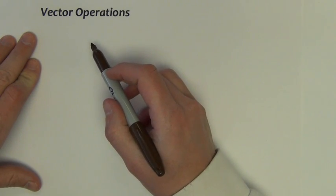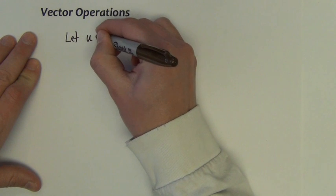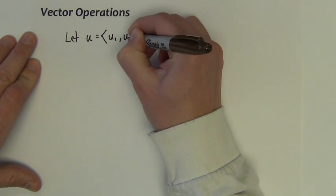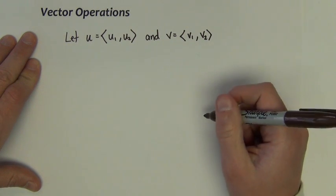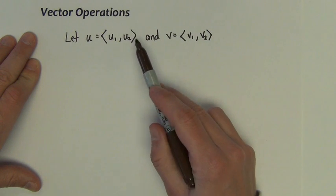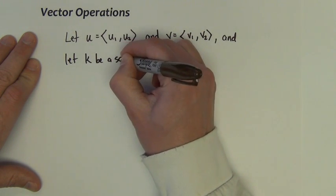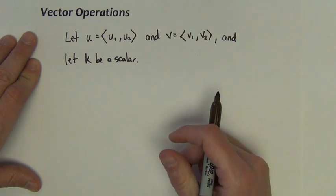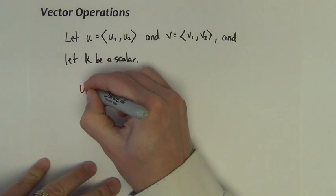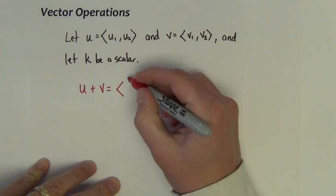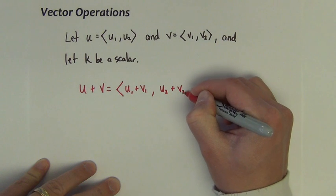Next, let's look at some vector operations. How do you take maybe two different vectors and work with those vectors? Let's let vector U be (U1, U2) and vector V be (V1, V2). Let K be a scalar, just some constant. The following formulas will be true: We could combine vectors U and V with addition. To add the two vectors, we're going to simply add their X's and add their Y's.